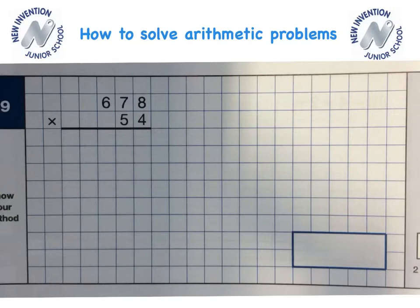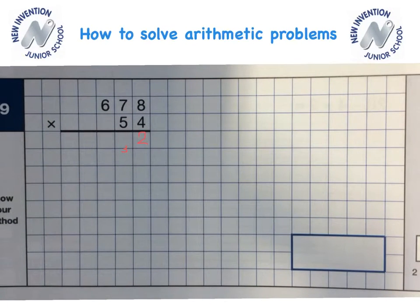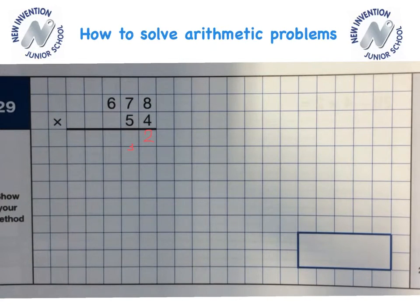So 4 times 8 is 32. So we'll write the 2 in the units column and the 3 tens will carry over. When I now multiply 70 by 4, I'm simply going to use my knowledge of 7 times 4 to help speed up the calculation. Therefore, 7 times 4 is 28. So I know 70 times 4 is 280. I'm then going to add the 3 tens onto it. So that gives me 310. So I'll write that in that column. Carrying the 300 over into the next column.